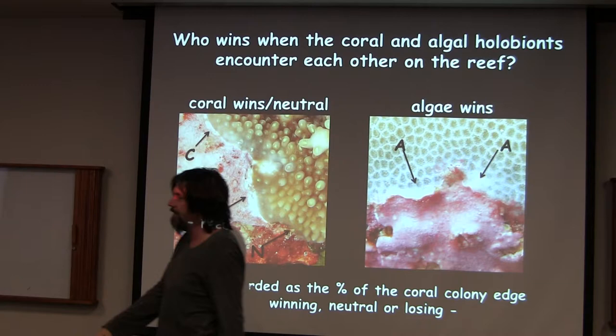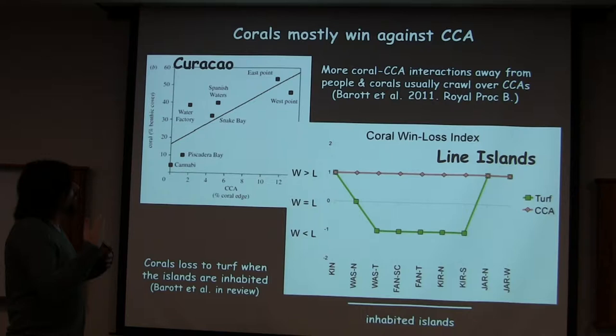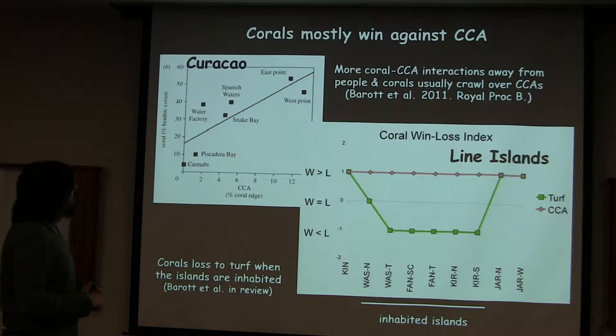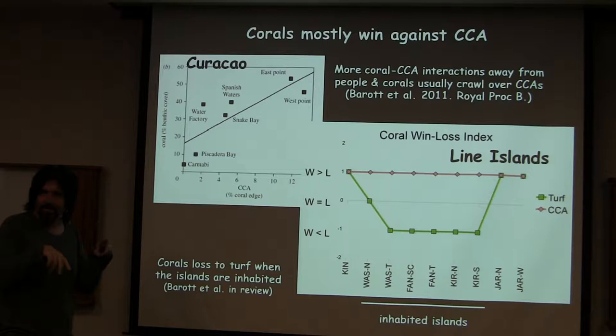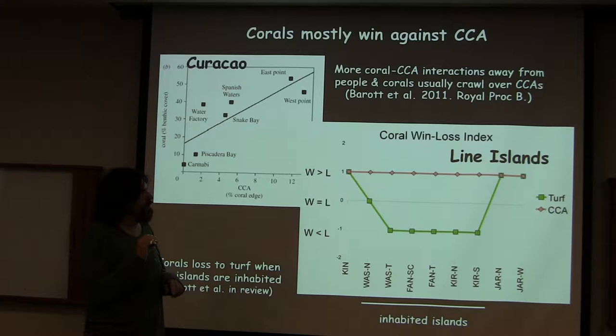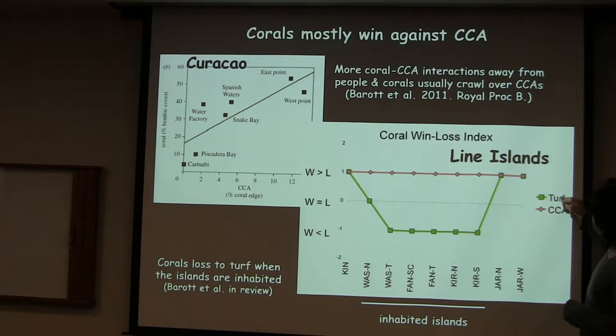The take-home message from all of this — we have it from the Caribbean and we have it from the Blind Islands — is that there are more coral-CCA interactions the further you get away from people. CCA and coral seem to get along basically. And then the win-loss dynamic changes. What's really important is this one here, because this is the win-loss of turf — so this is the turf basically winning against the coral, or the CCA winning against the coral.